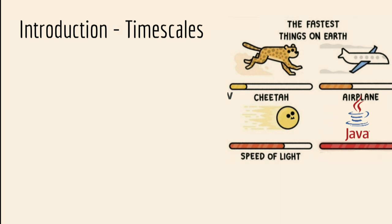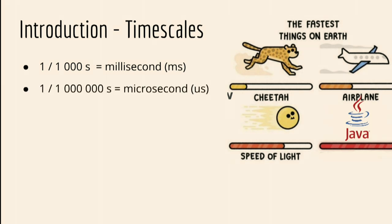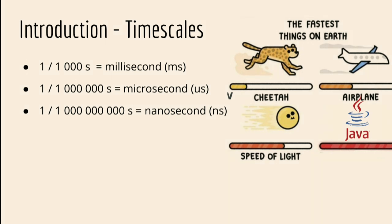Let's speak about time scales. One thousandth of a second is a millisecond — really important. One millionth of a second is a microsecond. One billionth of a second is a nanosecond. Where Java sits in those metrics, we are going to see in the next slides.